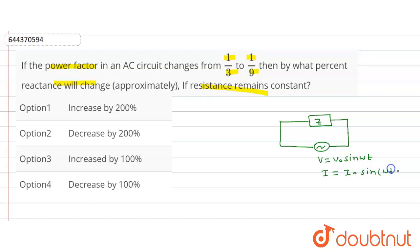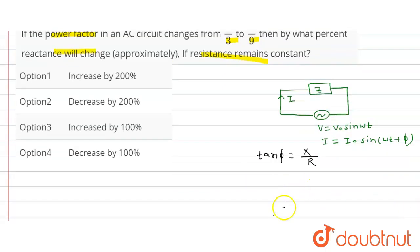V is equal to V naught sine omega t, and current I is equal to I naught sine omega t plus phi. Now we know tan phi is equal to reactance X over resistance R.